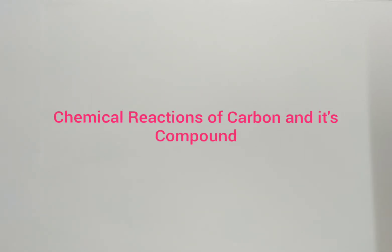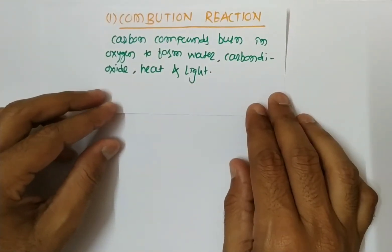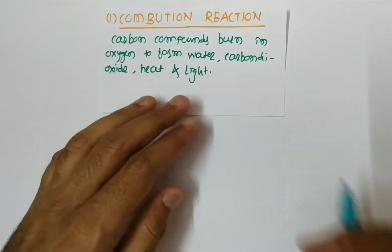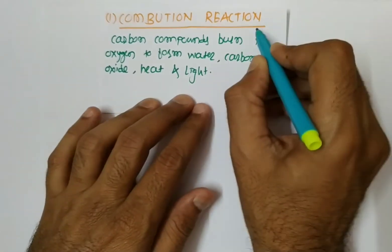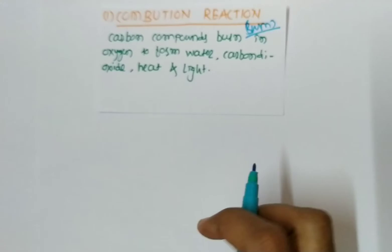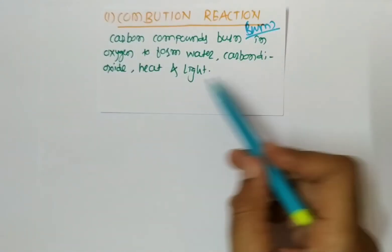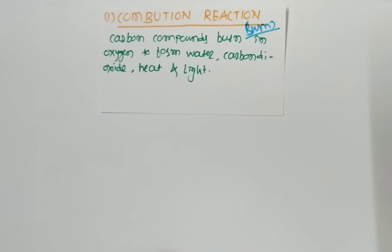Hello my dear students. In this part of the video we will discuss about the chemical reactions of carbon and its compounds. The first reaction is the combustion reaction. Combustion reaction is nothing but burning — burning of any carbon compounds. Carbon compounds burn in the presence of oxygen to form water, carbon dioxide, heat and light. So we can use carbon as a fuel.